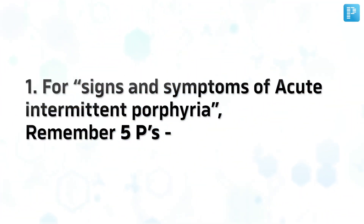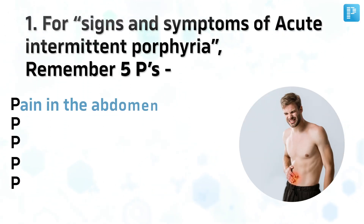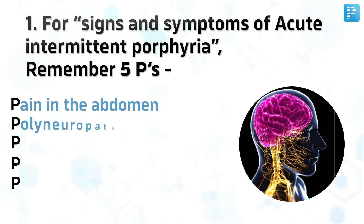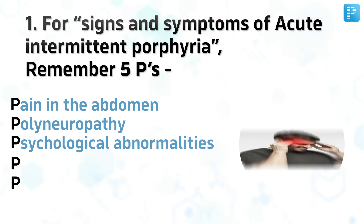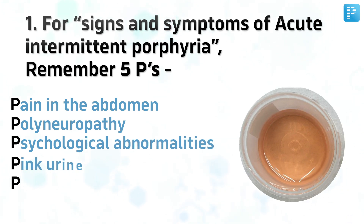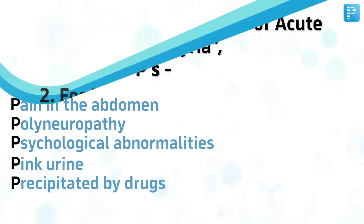Number 1. For signs and symptoms of acute intermittent porphyria, remember 5 Ps: Pain in the abdomen, polyneuropathy, psychological abnormalities, pink urine, precipitated by drugs.